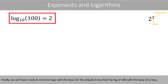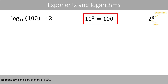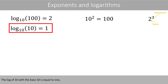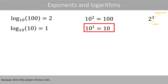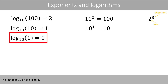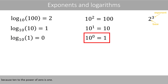Finally, we'll have a look at common logs with the base 10. We already know that the log of 100 with the base 10 is 2, because 10 to the power of 2 is 100. The log of 10 with the base 10 is equal to 1, because 10 to the power of 1 is 10. The log base 10 of 1 is 0, because 10 to the power of 0 is 1.